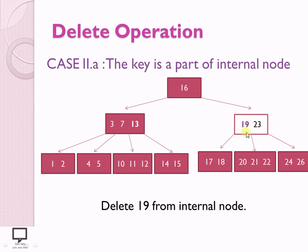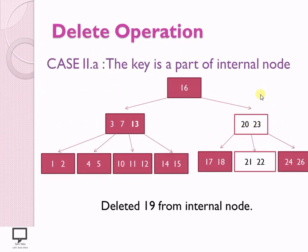The right child has more keys (3), so I select the nearest key to 19, which is 20. I replace 19 with 20 — pushing 20 up to the position of 19. After this replacement, the minimum number of keys (2) is satisfied for order 6, all key values remain in ascending order, and all keys in the left child of 20 are less than 20 while all keys in the right child are greater. This is how Case 2A is performed.